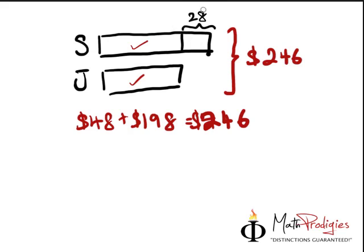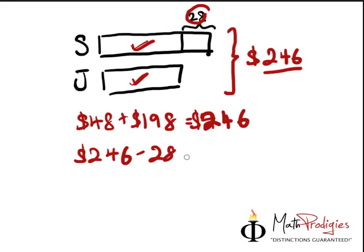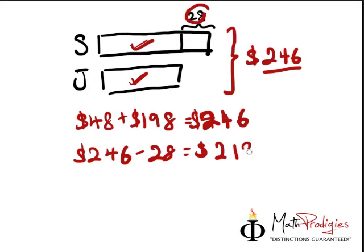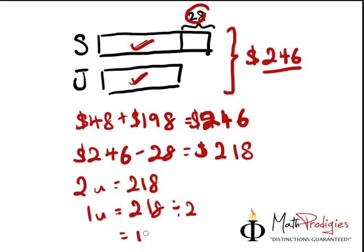Now, if this portion is $28 and the whole thing is $246, you can find out what one and two units are. First, you minus $28 from $246. Using our calculator: $246 minus $28 gives you $218. So two units equals $218. How much is one unit? You divide by two: $218 divided by two gives you $109.